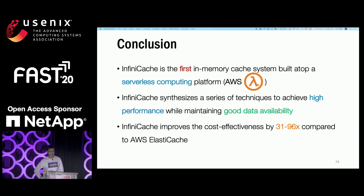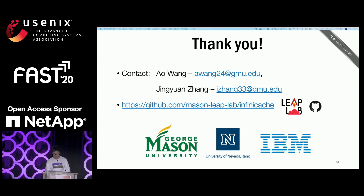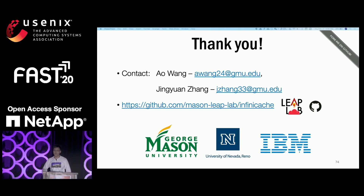In conclusion, I have shown how we explore the emerging serverless computing model and leverage several intelligent techniques to build an in-memory caching system. Infinity Cache achieves high performance and cost-effectiveness while maintaining good data availability. Most importantly, Infinity Cache improves cost-effectiveness by 31 to 96 times compared to Elastic Cache. Infinity Cache is already open source — you can find it at the Mason Leap Lab. You're welcome to fork it and play with it. Thank you for your attention, and I'm happy to take any questions.